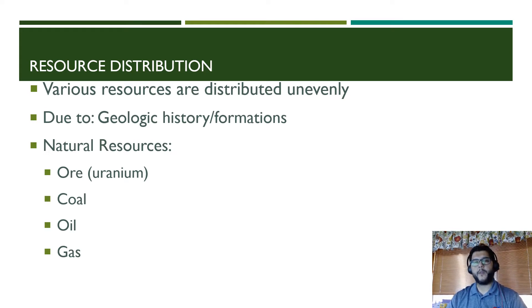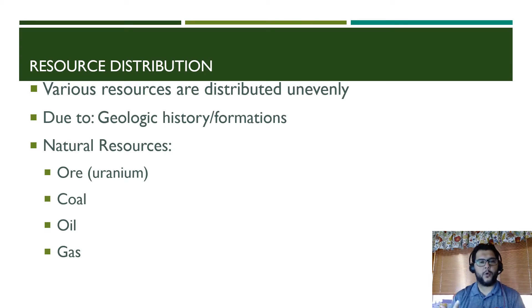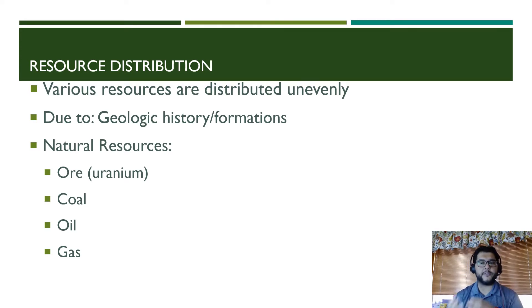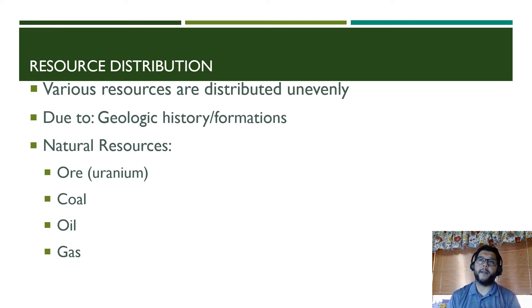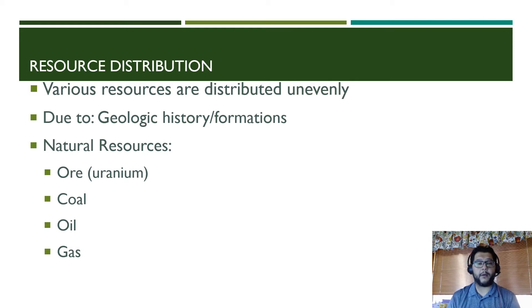When we're talking about resources, we're talking about the main three fossil fuels: coal, oil, and gas. We're also talking about uranium, because uranium is a fuel — it's not a fossil fuel, but it is a finite fuel that we use in nuclear power.